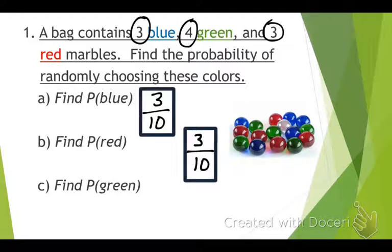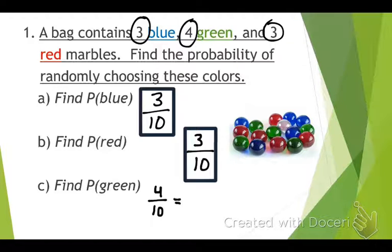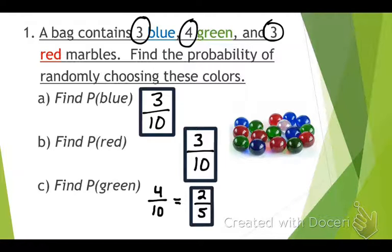Next one — there are four green marbles and ten total, so it's four over ten, which we should be able to reduce. You are correct. Remember, from now until the end of your math career, you always want to simplify or reduce everything. So there's a two out of five chance that I would pull out a green marble.